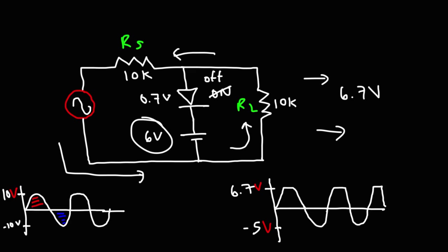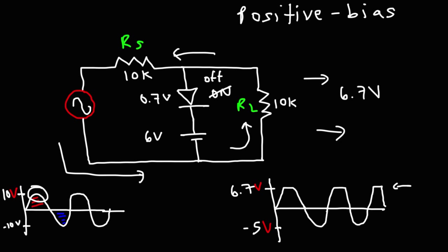By introducing a battery, you can determine the maximum clipped voltage. This is a positive shunt clipper circuit because a portion of the positive half cycle of the sine wave was clipped. More specifically, it's called a positive bias shunt clipper circuit. The reason why this is a bias clipper circuit is because we're using a DC source to set the limit of the output voltage.